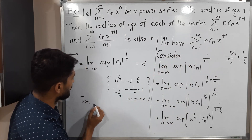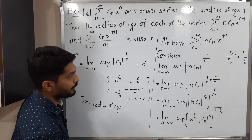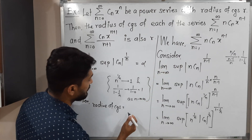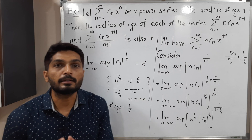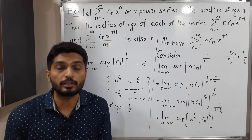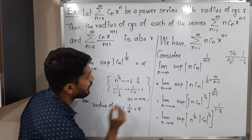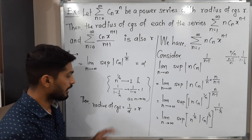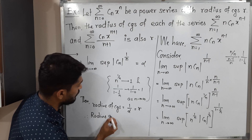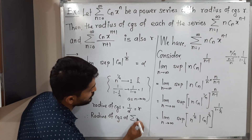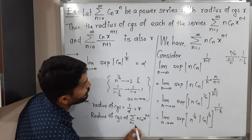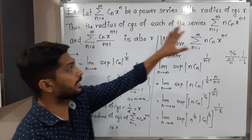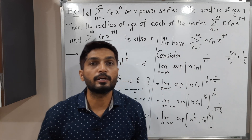Therefore, the radius of convergence is the reciprocal of this limit, which is 1 by alpha. But 1 by alpha is nothing but r. So we have proved that the radius of convergence of the power series summation n Cn x raised to n minus 1, for n running from 1 to infinity, is r. Thus, the power series obtained by differentiating the original power series has the same radius of convergence r.